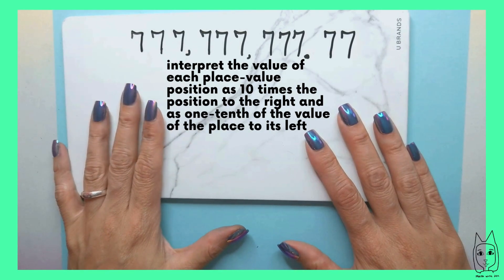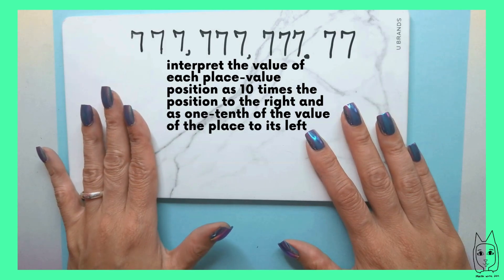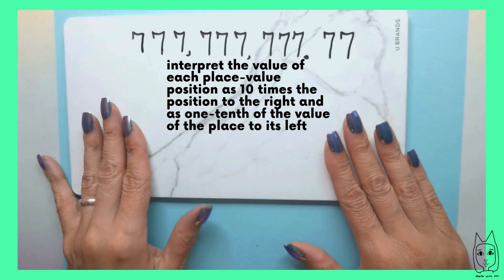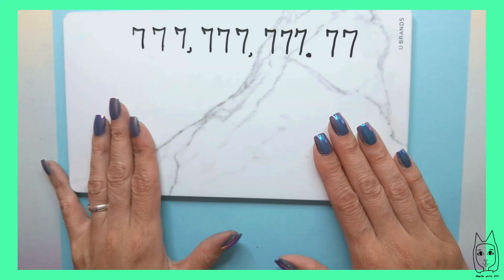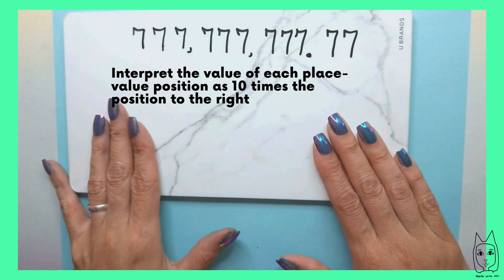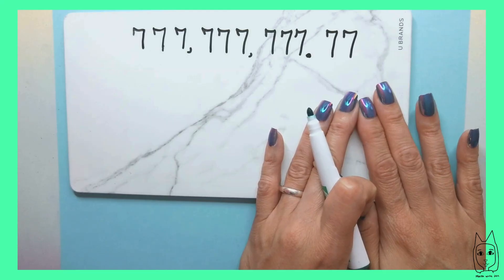Hi, welcome back to Math with Jen. In this video, we are going to interpret the value of each place value position as 10 times the position to the right and as one-tenth of the value of the place to its left. We're going to start off with that first piece of the standard: we are going to interpret the value of each place value position as 10 times the position to the right.